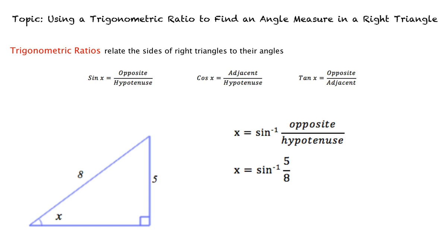We will solve by inputting the inverse sine of 5 eighths into our calculators. This results in 38.682 degrees when rounded, 38.7 degrees. This is our final answer.